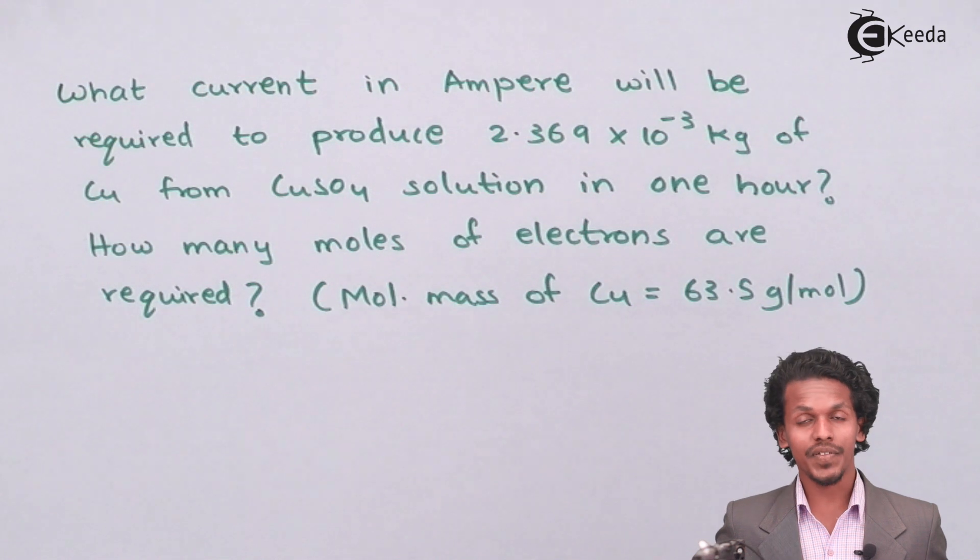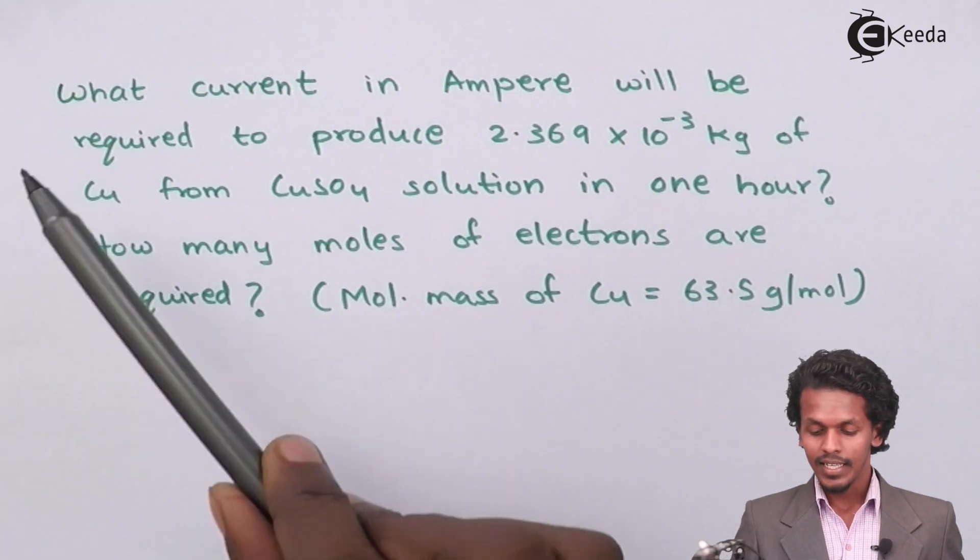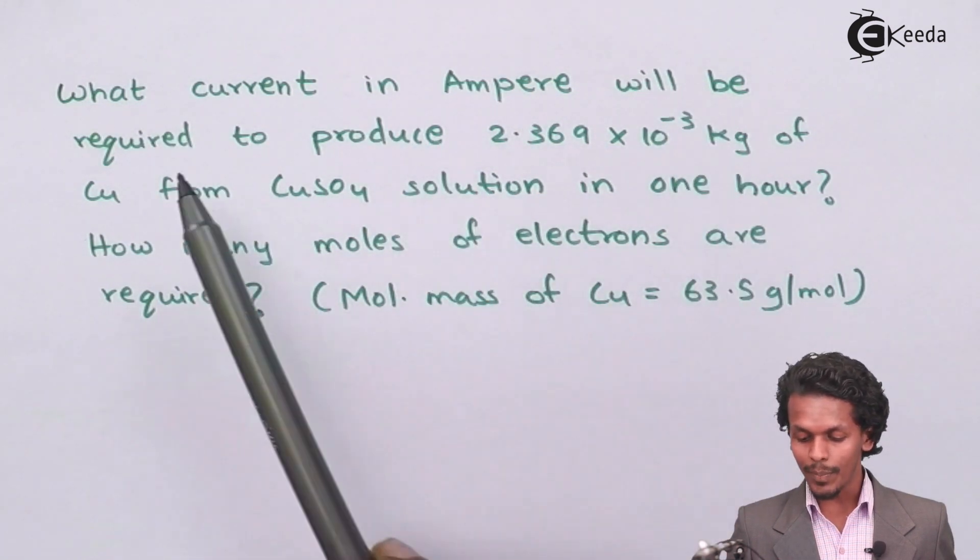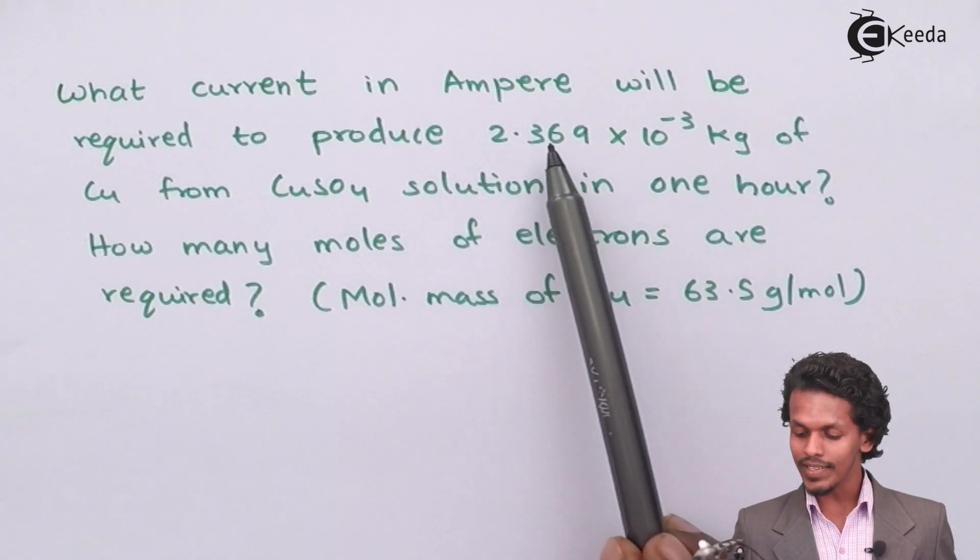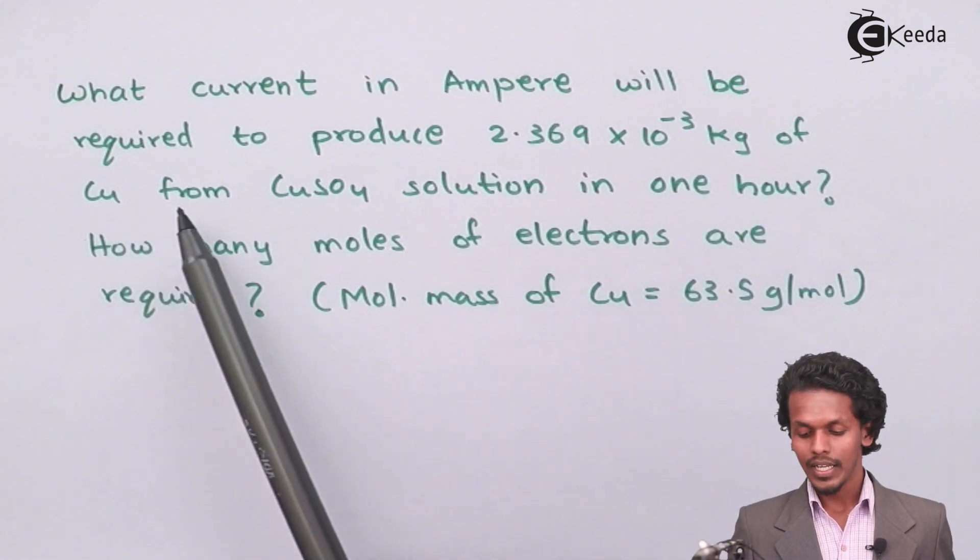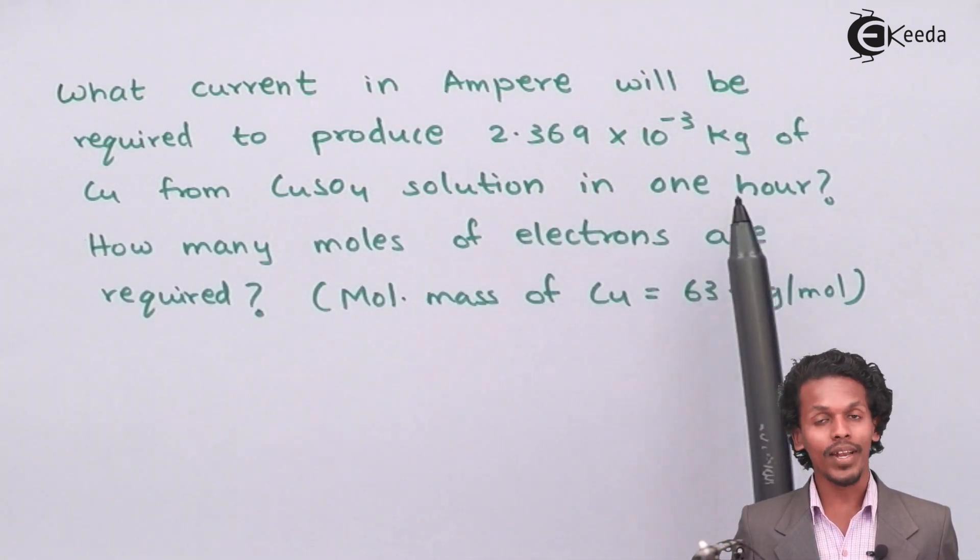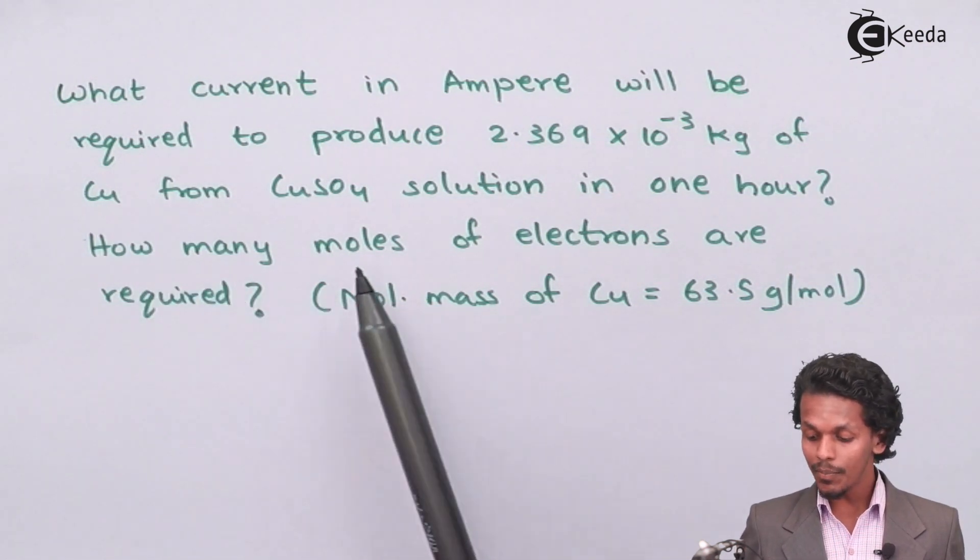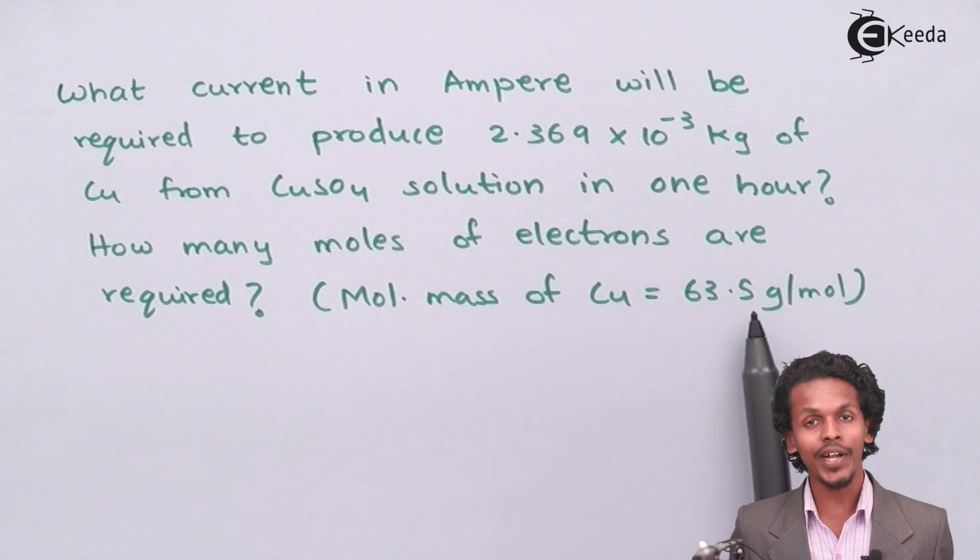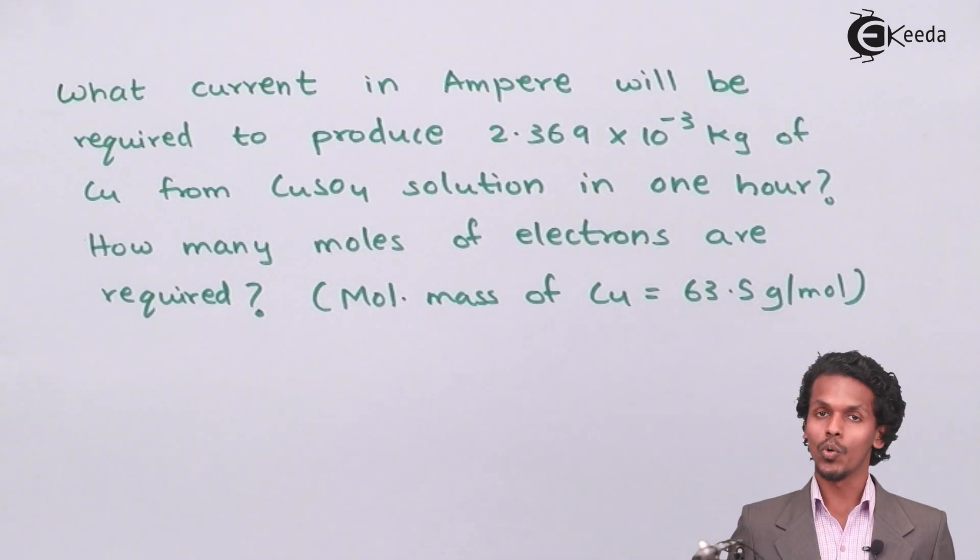As mentioned on your screen, the question asks: what current in ampere will be required to produce 2.369 × 10^-3 kg of copper from copper sulfate solution in one hour? And how many moles of electrons are required when the molar mass of copper is given as 63.5 gram per mole?